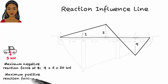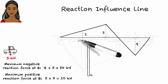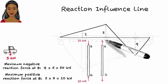And maximum positive reaction at B is two times five, or ten kilonewtons. So column BG has to be designed to carry a compressive force of ten kilonewtons and a tensile force of twenty kilonewtons.